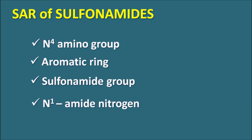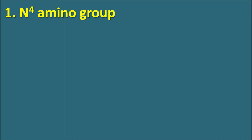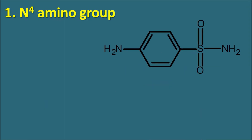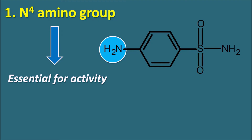Let us go through each part and see what structural modifications are possible and how activity is related. The first part is the N4 amino group — the amine nitrogen attached at the fourth position. This group is essential for activity, so replacing it with any other group results in loss of activity. Substitution on this N4 amino nitrogen results in two types of outcomes.